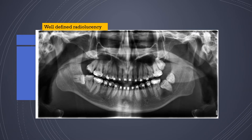Moving on to another radiolucency — this particular tooth in a patient receiving orthodontic treatment. The lower-right 7 is submerged, and the radiolucency associated with it could be an OKC or an ameloblastoma. On the radiograph alone it is impossible to clearly differentiate between the two — histopathology would have to be done for confirmation.